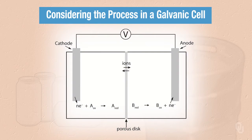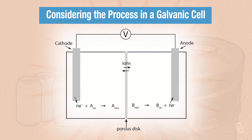We can consider this redox reaction in terms of a galvanic cell. In this diagram, two chambers are separated by a porous disk that allows ion movement. The left chamber contains the cathode where reduction occurs; the right chamber contains the anode where oxidation occurs. B in the right chamber starts reduced and becomes oxidized, while A in the left chamber starts oxidized and becomes reduced. We now want to think about this galvanic cell in terms of the alcohol dehydrogenase reaction.